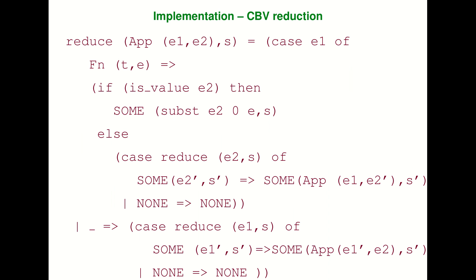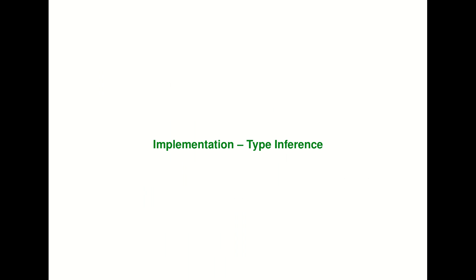When implementing reduction, if we are applying a function and e1 is a function value and e2 is also a value, we just do a substitution, substituting zero. One thing that happens when you go from an abstract machine to something like bytecode is that all these substitutions can be turned into operations on the argument stack — this number can be thought of as a stack offset. That's how the implementation of the reductions works and how we implement substitution.